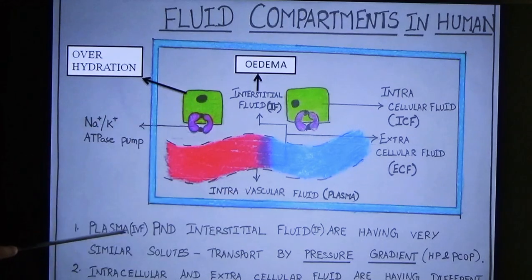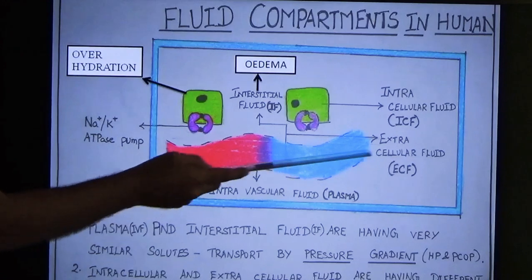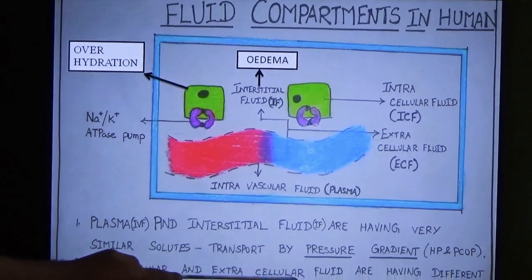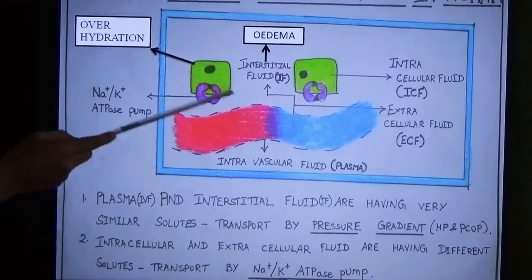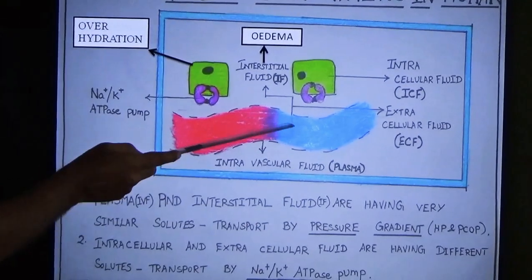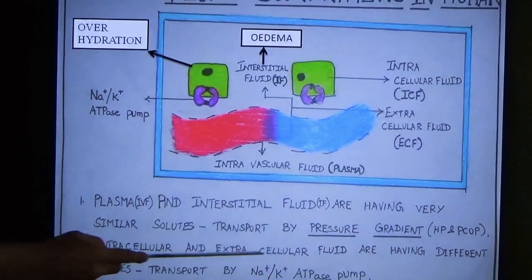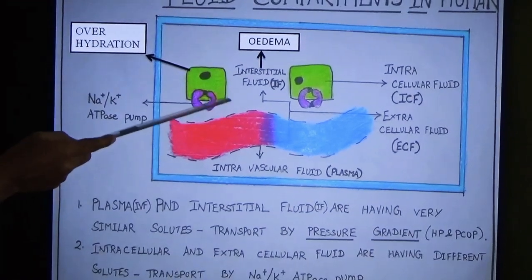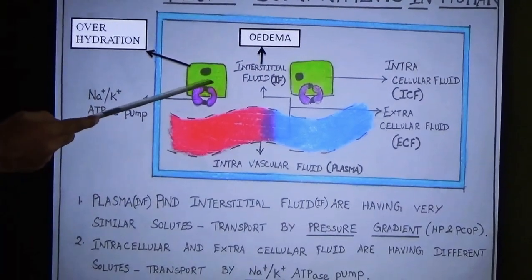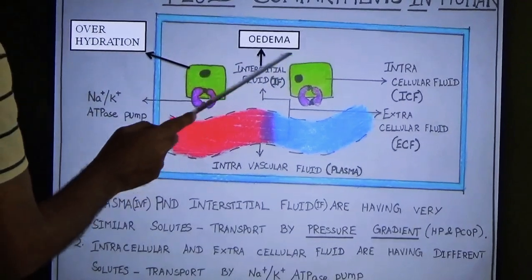Plasma and interstitial fluid have very similar solutes, as both are components of extracellular fluid. Intracellular and extracellular fluids contain different solutes. Transport of fluid between plasma and interstitial fluid occurs by pressure gradient — hydrostatic pressure (HP) and plasma colloid osmotic pressure (PCOP). Transport between intracellular and extracellular fluid occurs via the sodium-potassium ATPase pump, which requires energy.